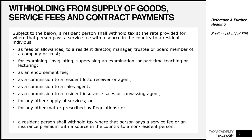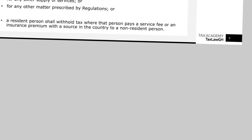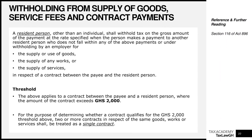A resident person other than an individual is required to withhold tax on the gross amount of a payment where they make payments for the supply of goods, works, or services under a contract. Generally, individuals should not go around withholding at the mall. This withholding applies where the contract exceeds the threshold of two thousand Ghana cedis — we'll come back to the threshold details shortly.